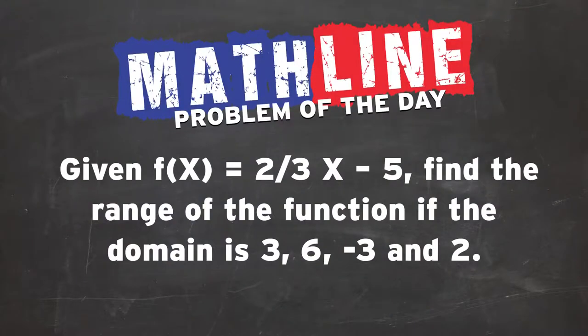Let's take a look at our problem of the day. Problem of the day today goes back to the good old f of x, which is a function. The function of x equaling two-thirds x minus 5. We want to find the range of the function if the domain is 3, 6, negative 3, and 2.